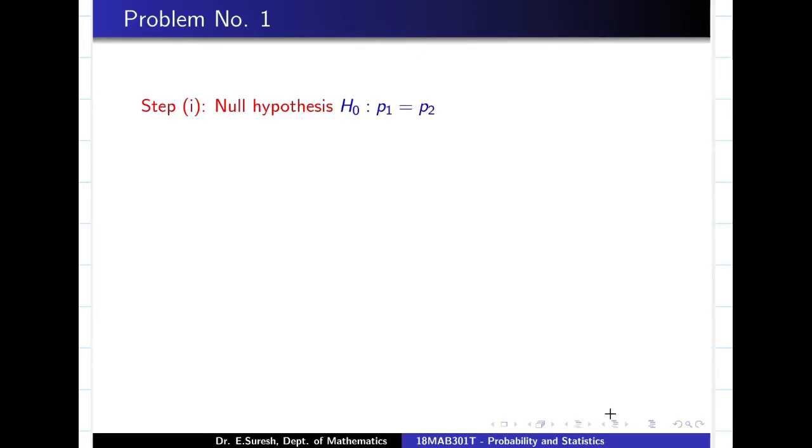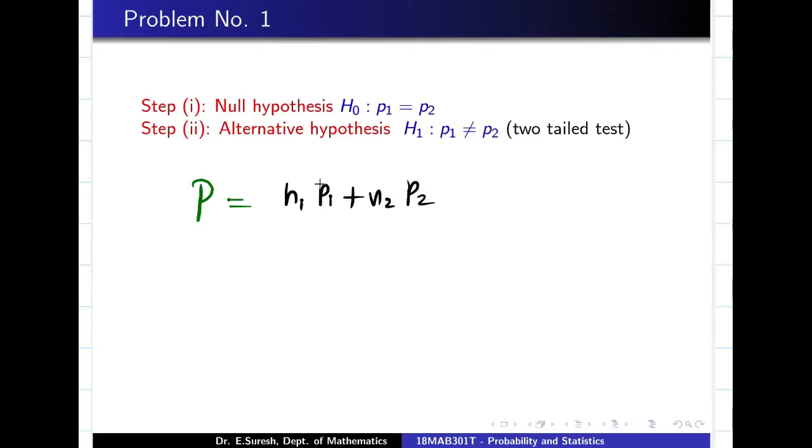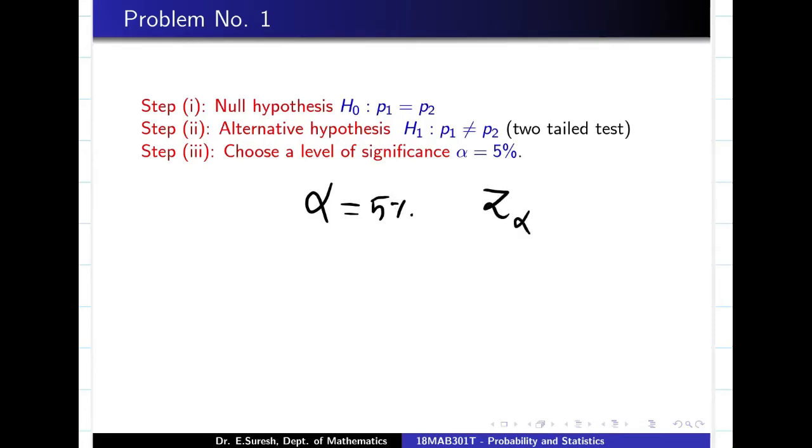Null hypothesis, I am going to take P1 equal to P2. Alternate hypothesis, P1 is not equal to P2. So now, capital P, I have to find this. My job: PN1P1, PN2P2, N1 plus N2. And alpha is not given. So alpha is not given, you have to always choose 5%. So it is going to be two-tailed test. You know very well from the table, two-tailed test, 5% is going to be 1.96.